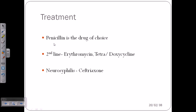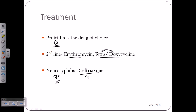For treatment, penicillin is the obvious choice for Treponema pallidum. The drug of choice is Penicillin G. Second-line alternatives include erythromycin, tetracycline, or doxycycline. For neurosyphilis — the tertiary stage — ceftriaxone, a third-generation cephalosporin drug, is required.